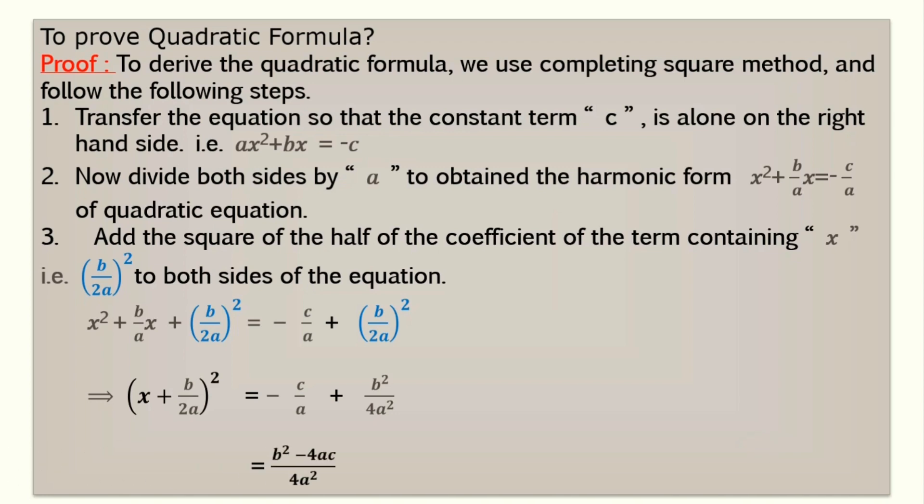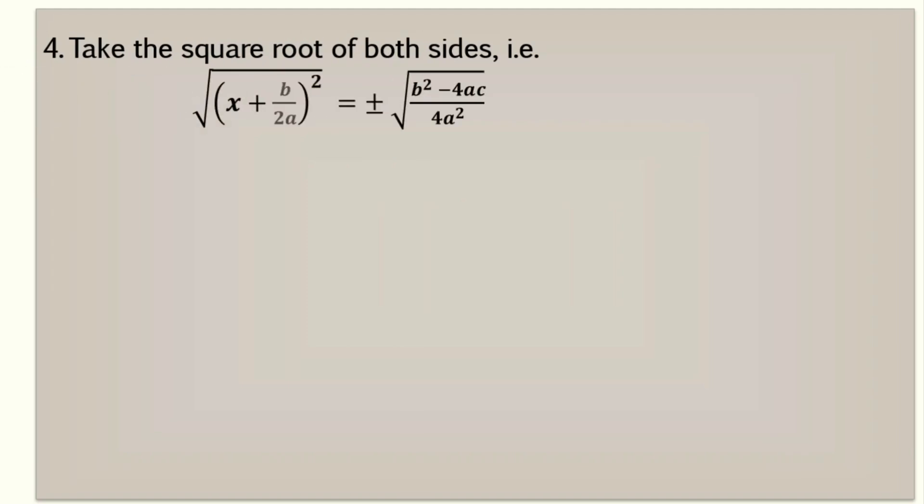The left hand side becomes a complete square. On the right, taking LCM we get b square minus 4ac divided by 4a square. Now we want to remove the square from the left. So we will take the square root of both sides.